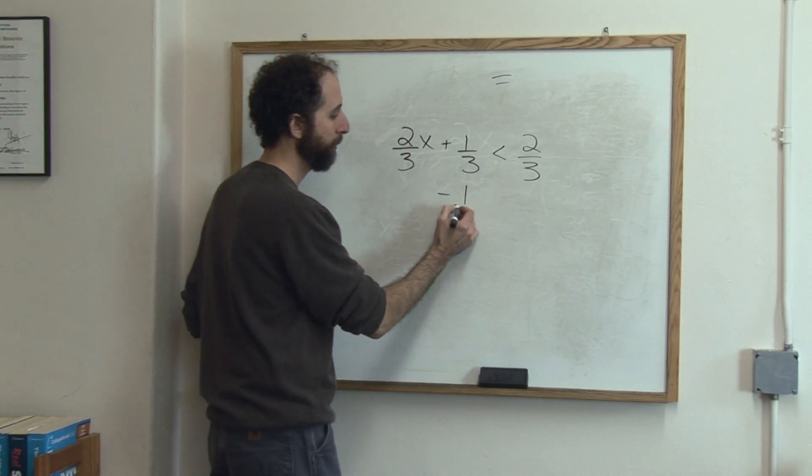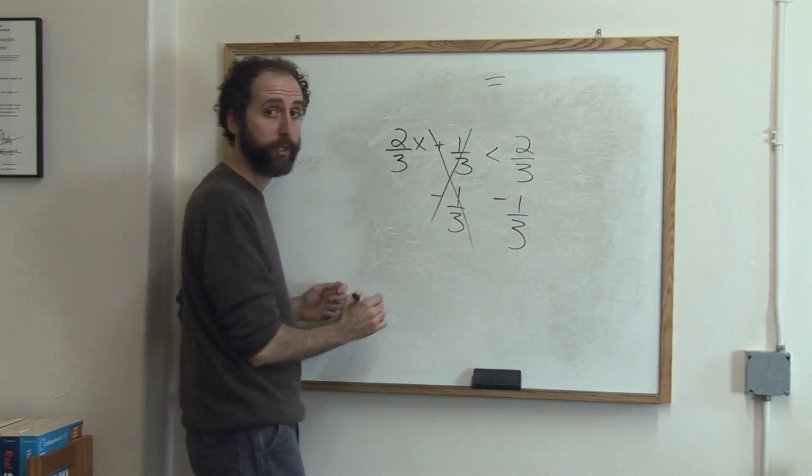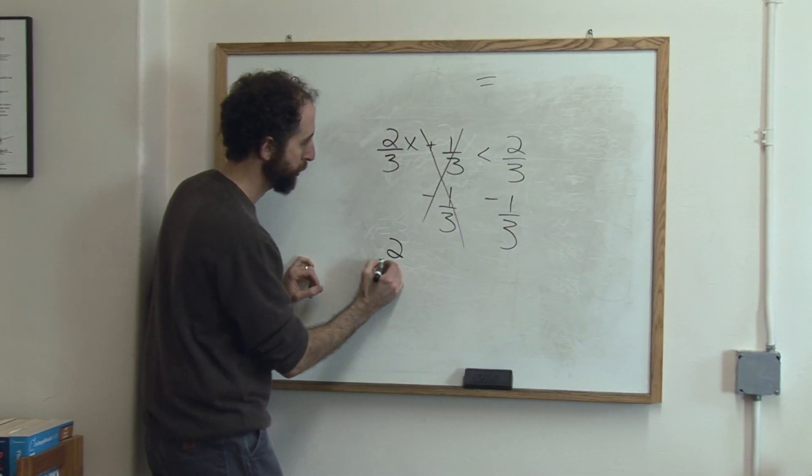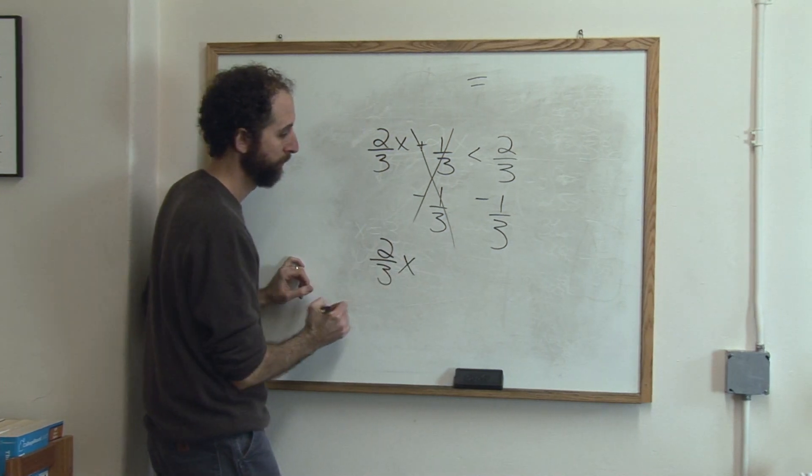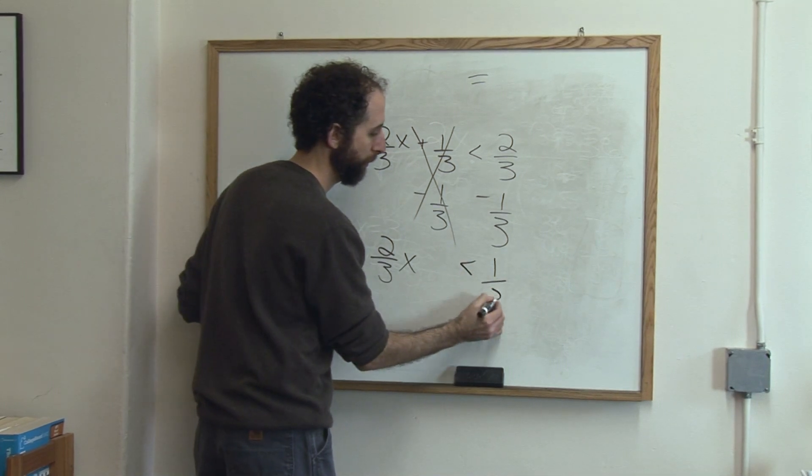So we're going to subtract 1 third from both sides. That cancels, that's why we did it, leaving me just 2 thirds x here. Keep the less than sign. 2 thirds minus 1 third is 1 third.